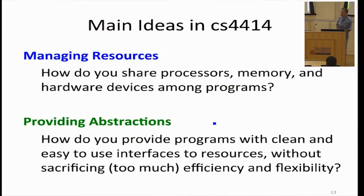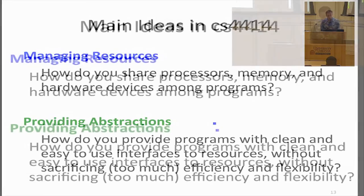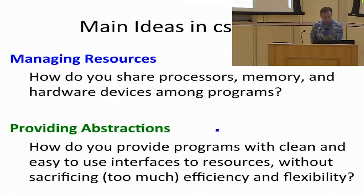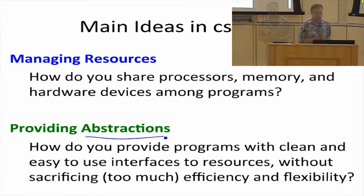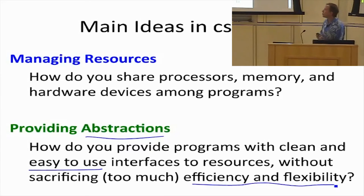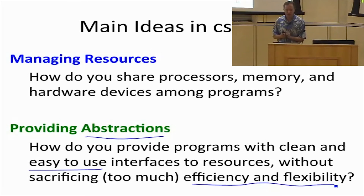The two big ideas that we'll see as common themes throughout this course are looking at ways to solve how to manage resources and how to provide abstractions to make it so you can write programs. The biggest challenge in creating abstraction is that if you provide a very high-level, easy-to-use abstraction, that means you're hiding lots of details. That's the challenge: to provide those easy-to-use abstractions without sacrificing too much control, and you need control for many things to get the kinds of efficiencies and flexibilities that you want.